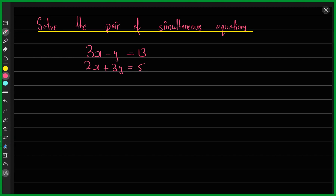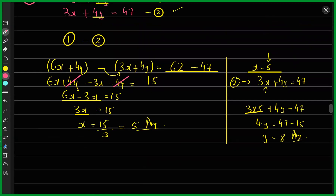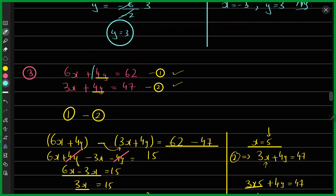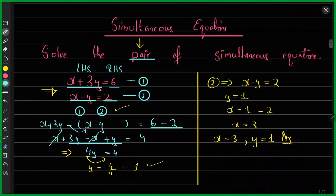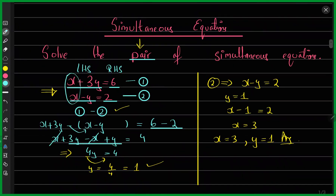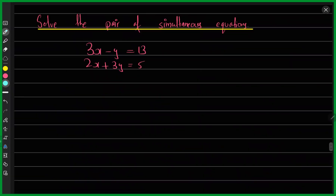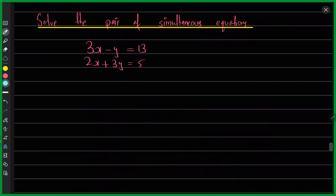How do I simplify this? I need to eliminate one of the two variables, but the coefficients are different. In previous questions, we had 4y and 4y the same — when subtracted, y was eliminated. Here, the coefficients are different, and even if I subtract directly, I would not be able to eliminate a variable.